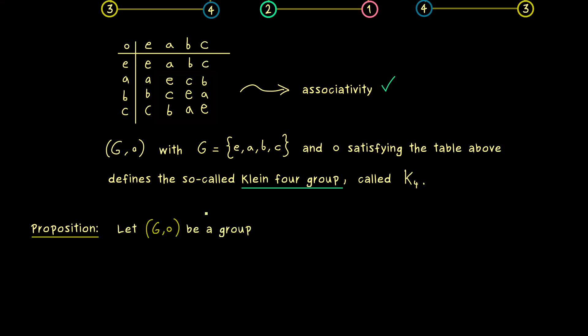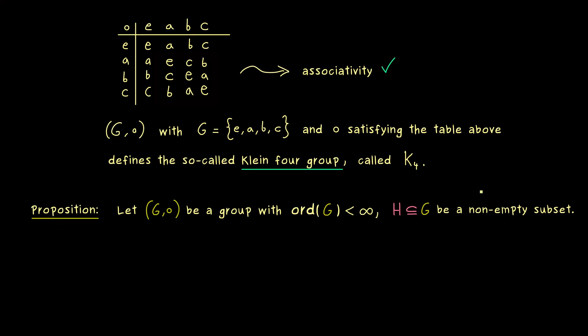This means now we assume that the order of our group G is finite. This is the only additional information we put into this proposition here.